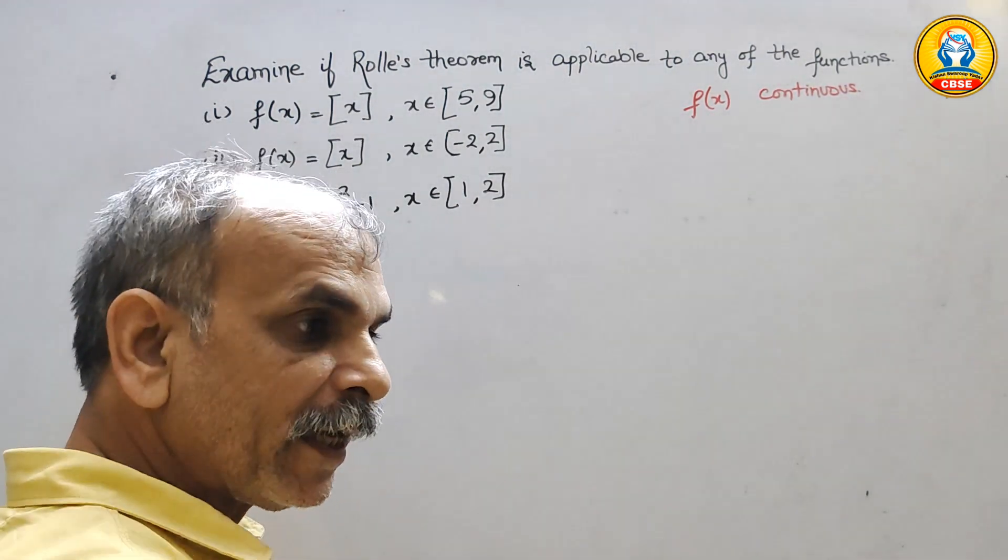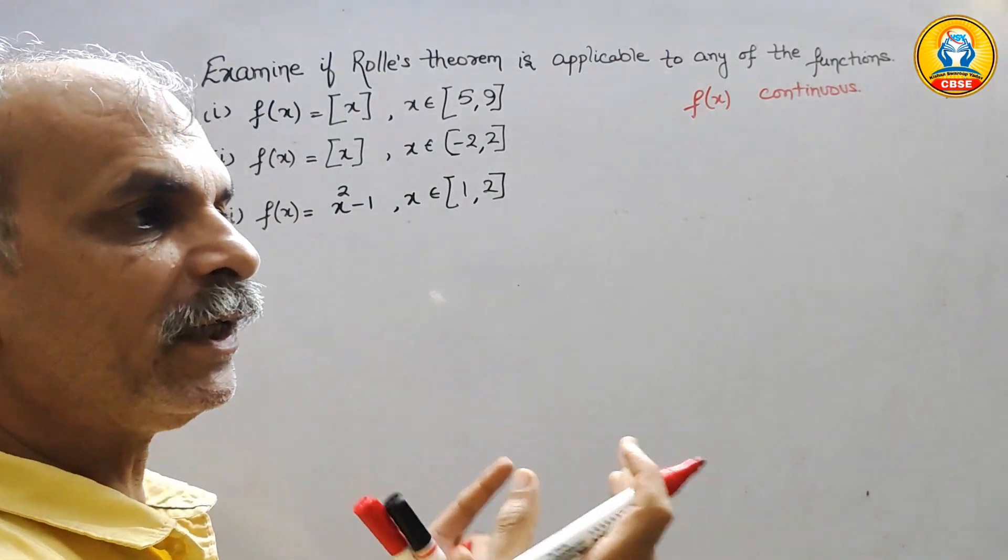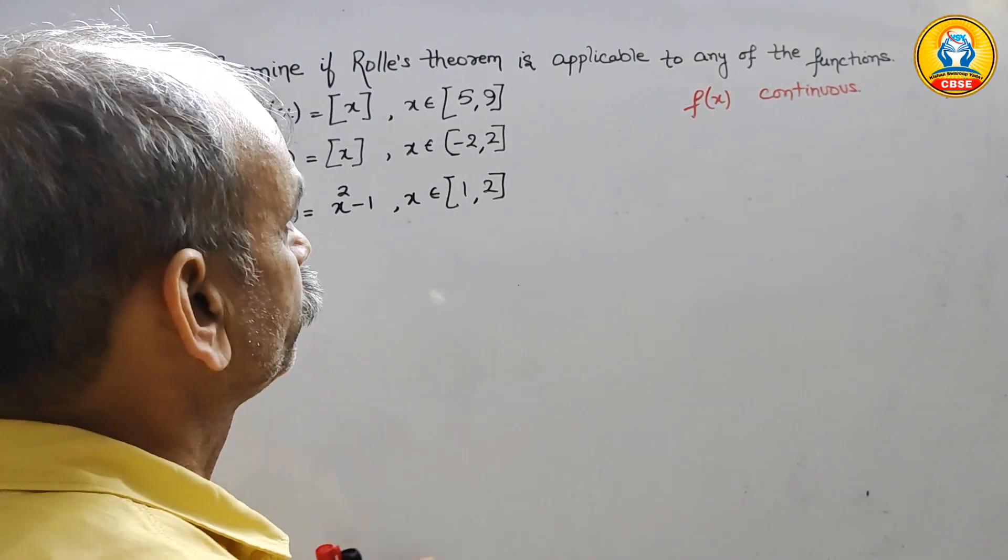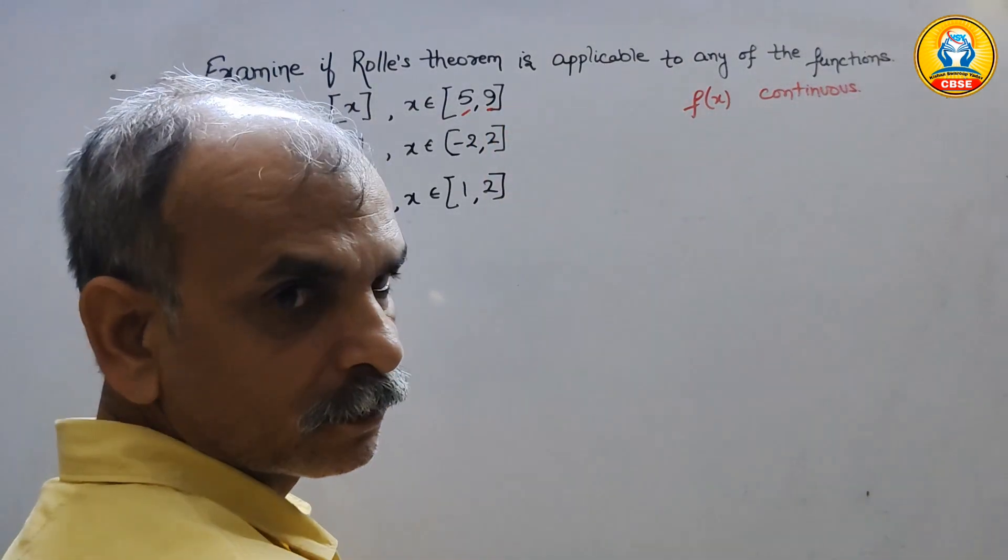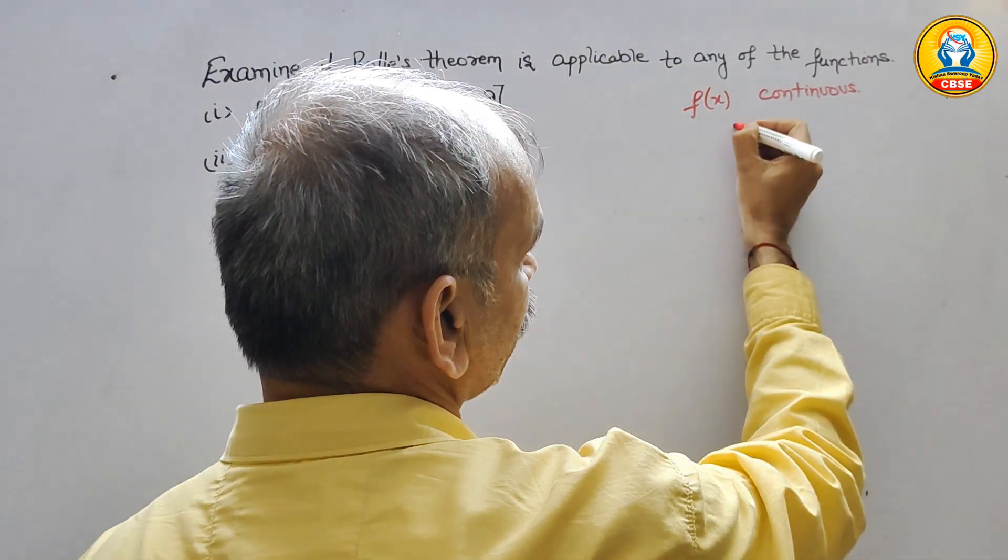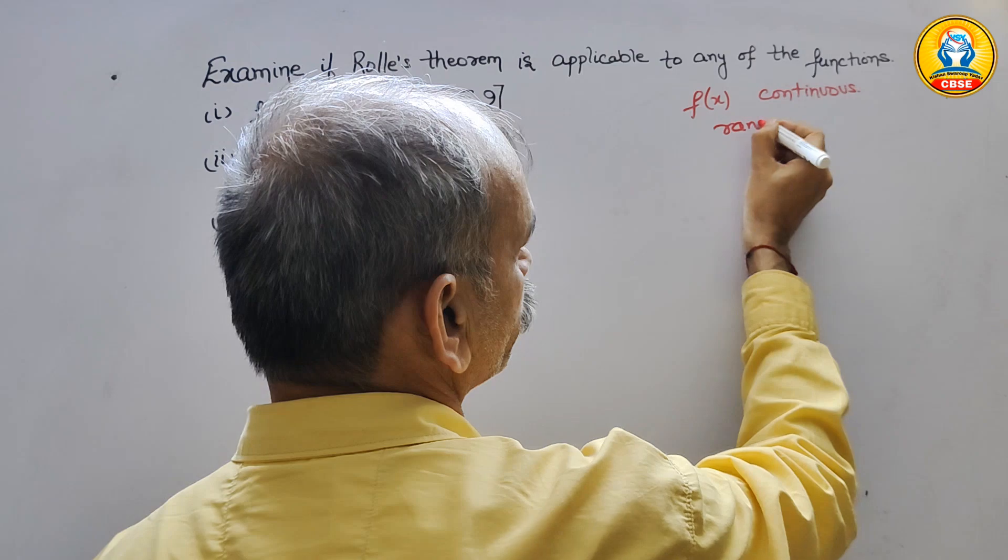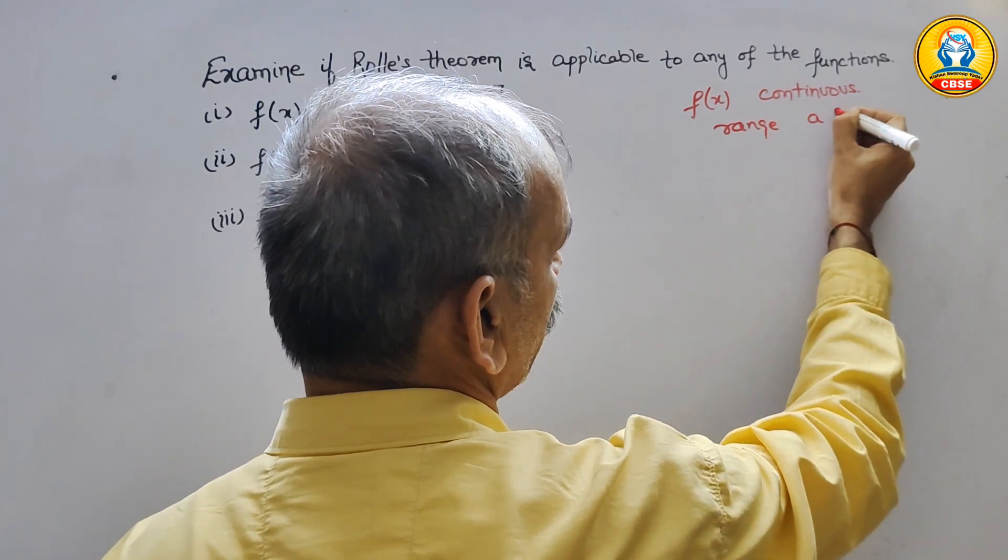Next, the range whatever they have given, we will take it as A and B. A and B is this one. First we have to take the range in A and B.